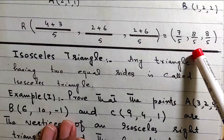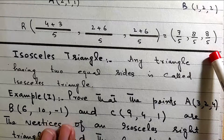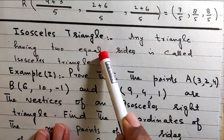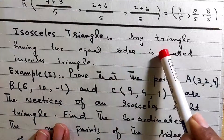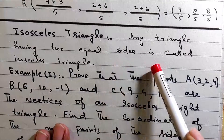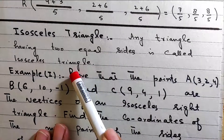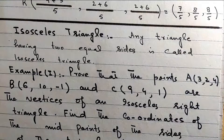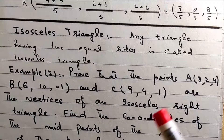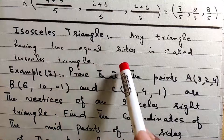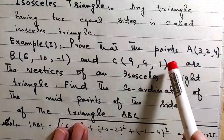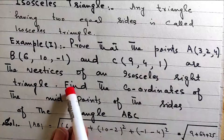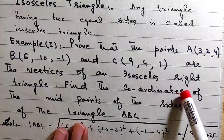The equation gives 7/5, 8/5, 8/5. Now an isosceles triangle — any triangle having two equal sides is called an isosceles triangle. Proof that the points A, B, and C are the vertices of an isosceles right triangle.